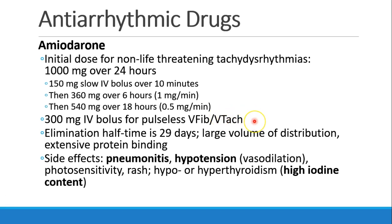Compare that with pulseless V-fib or V-tach — a code situation — where we give 300 milligrams as an IV bolus. Amiodarone has a very long elimination half-time of about 29 days and a very large volume of distribution. It's extensively protein-bound, so it really hangs around in the body for quite some time.